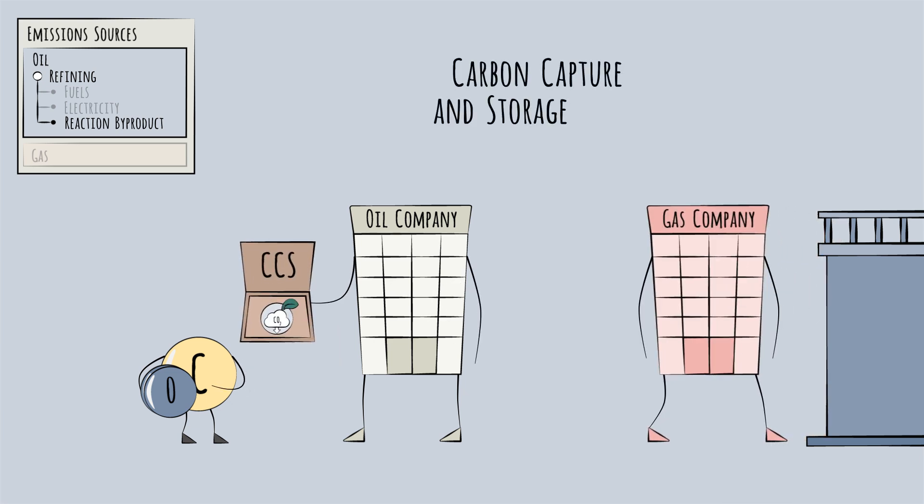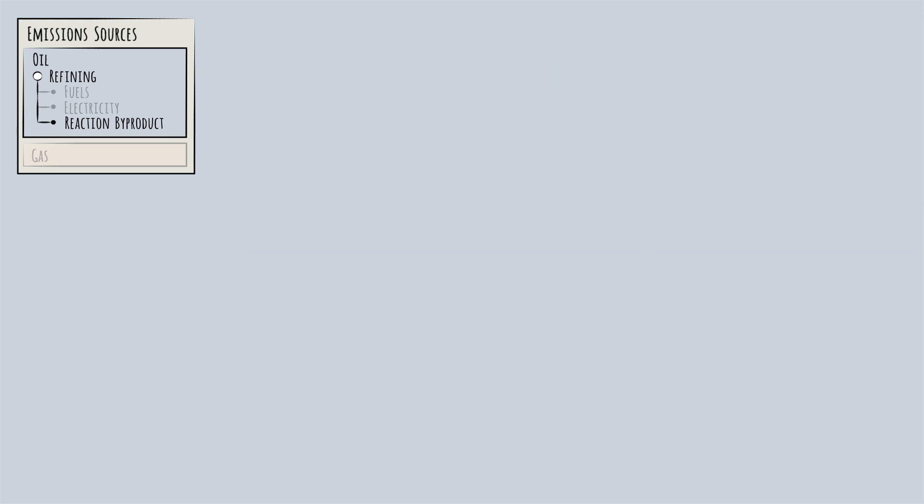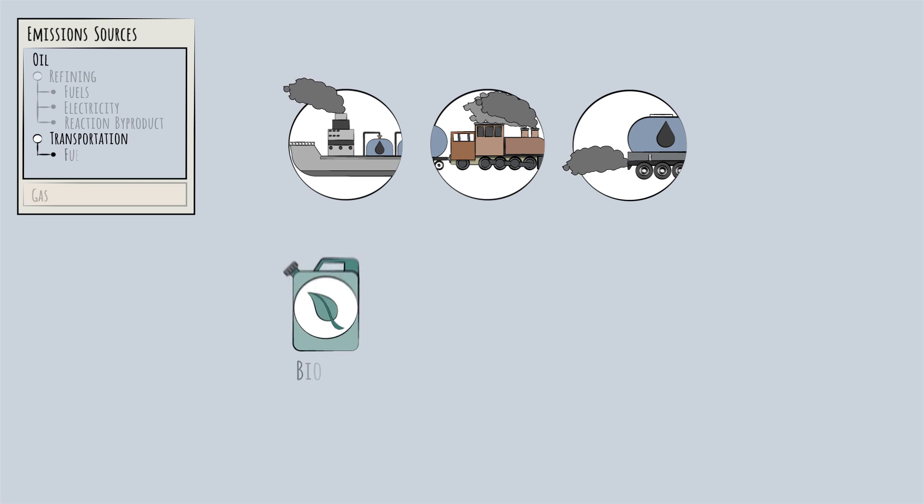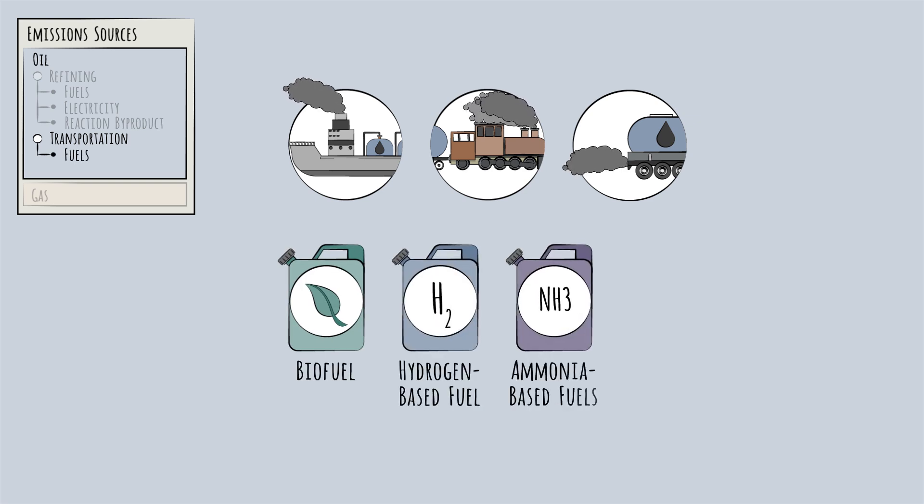Beyond the refinery, the other big source of emissions is transportation. Tankers, trains, and trucks delivering crude oil and refined oil products burn a lot of fossil fuels. Alternatives like biofuels, hydrogen or ammonia-based fuels, and EVs are being considered, though this is often led by players in the shipping and transportation industries.